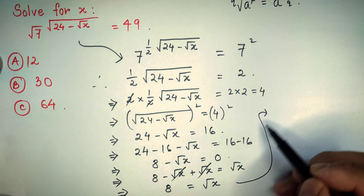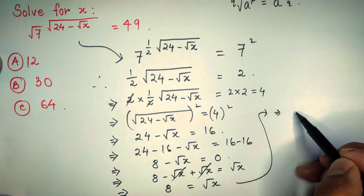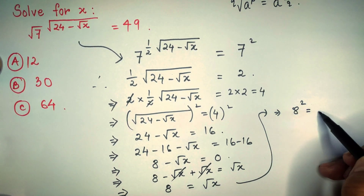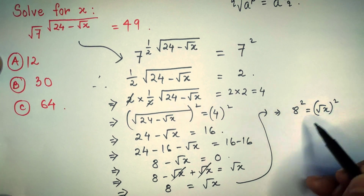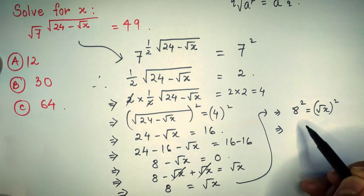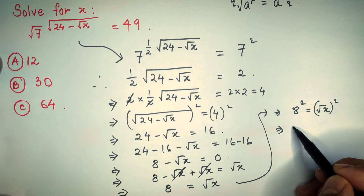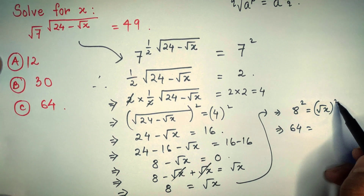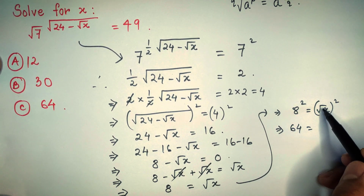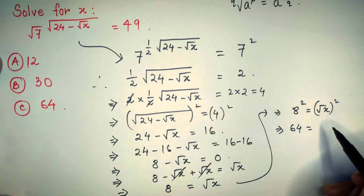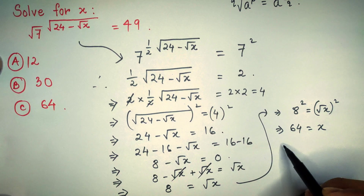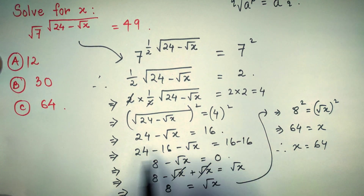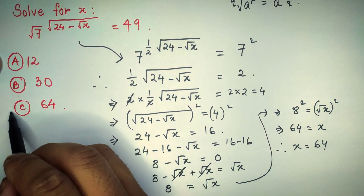After this, squaring both sides, we get: 8 squared is equal to (root over x) squared. 8 squared is 64, and the square and root over cancel each other, giving us x. Therefore, the value of x is 64, and our correct answer is option number C.